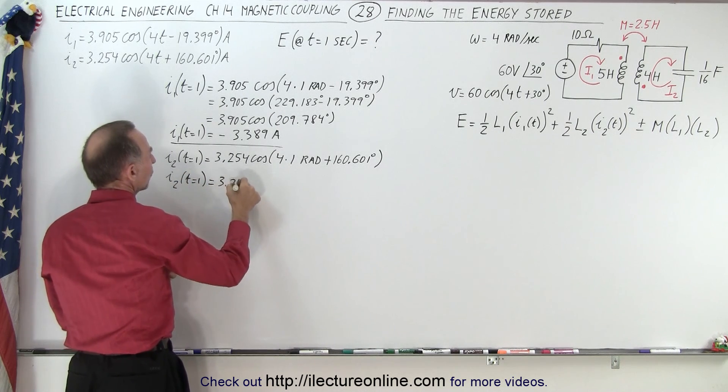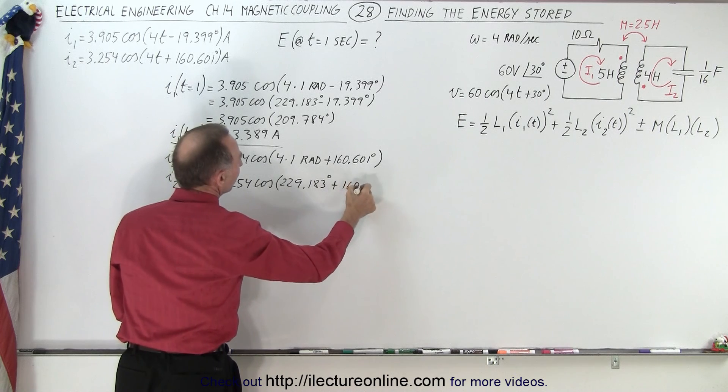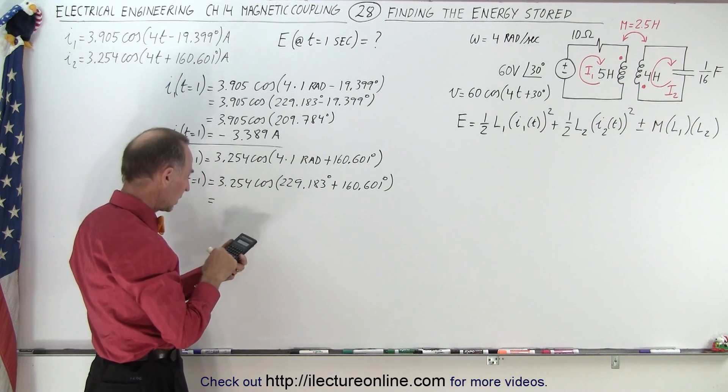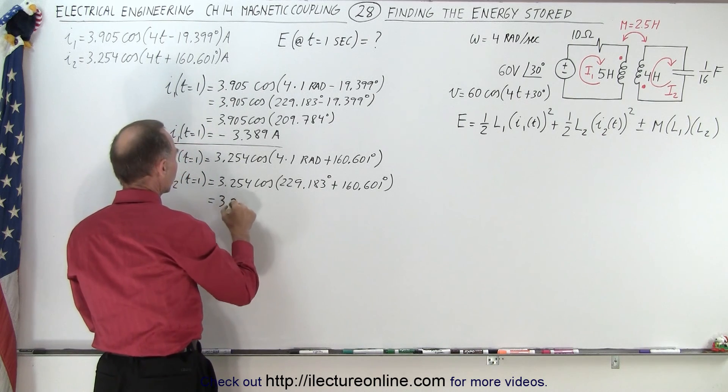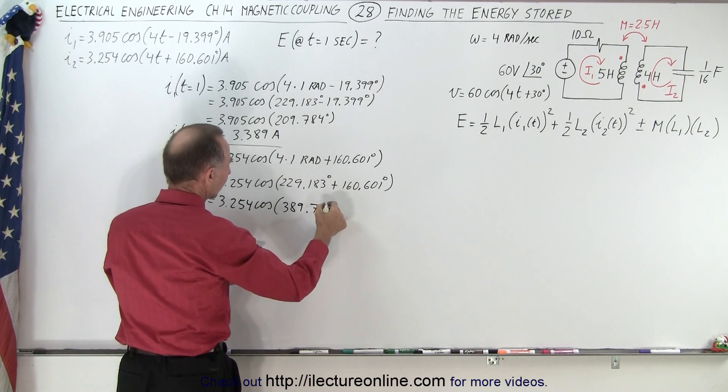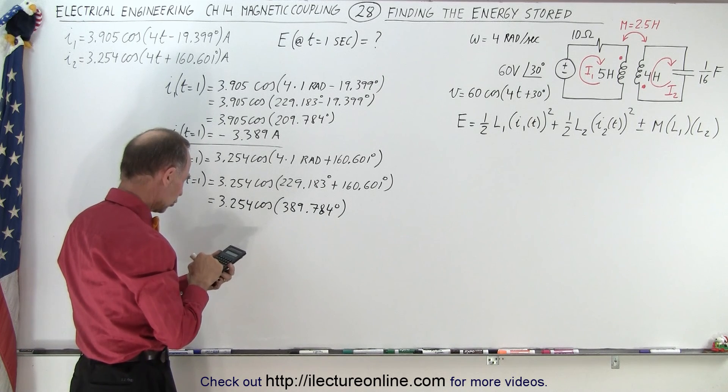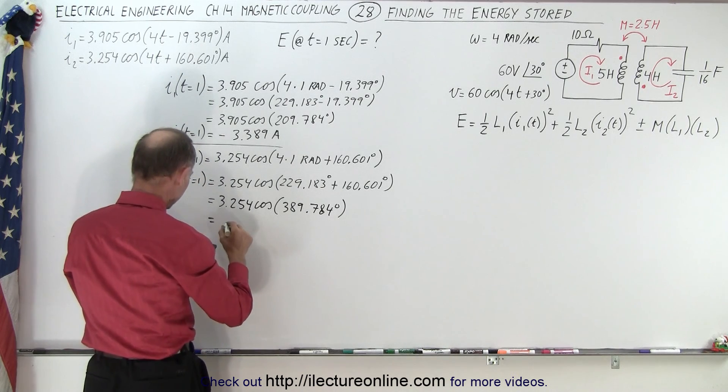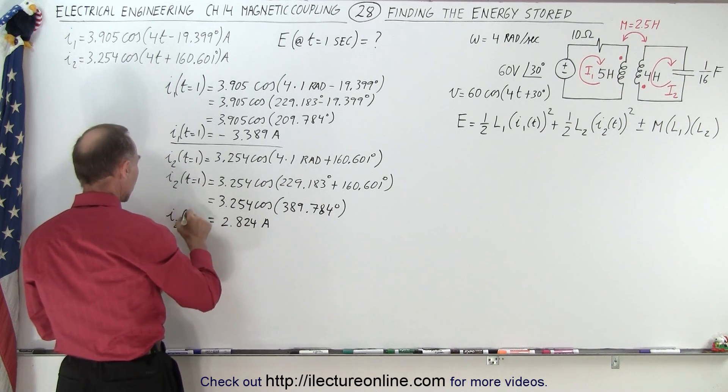We replace that with what it is in degrees, so when T equals 1 that's 3.254 times the cosine of 229.183 plus 160.601 degrees, which gives me 389.784 degrees. Take the cosine of that and multiply times 3.254, which gives me a positive 2.824 amps. This is I2 at T equals 1.